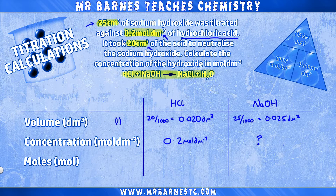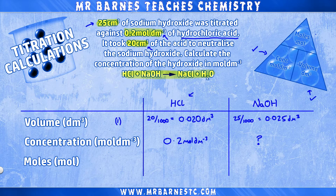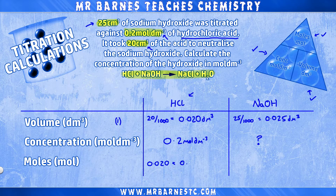At the moment I only have one piece of info on sodium hydroxide — the volume — so I can't get the concentration just yet. I do however have two bits of information on hydrochloric acid: the volume and the concentration. With this I can work out the moles. From the triangle, moles is volume times concentration, so 0.02 decimetres cubed times 0.2 moles per decimetre cubed gives me 0.004 moles. That would give you your second mark.